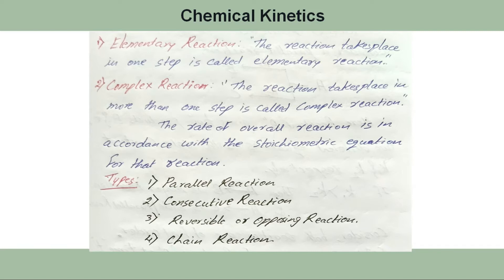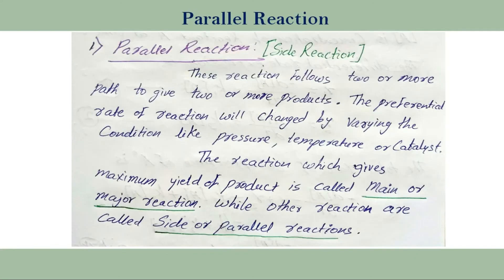Number one: parallel reaction. Number two: consecutive reaction. Number three: reversible or opposing reaction. And number four: chain reaction. So let us learn one by one. The first one is a parallel reaction, also called a side reaction. These are reactions which follow two or more paths to give two or more products.